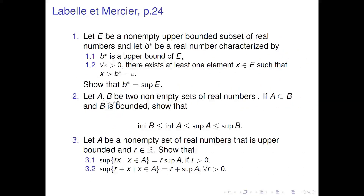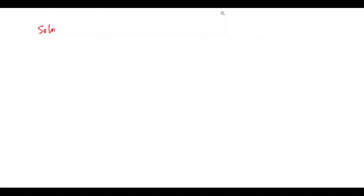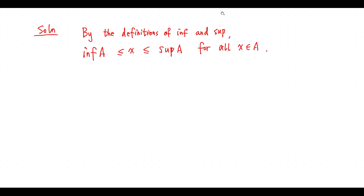Let A, B be two non-empty sets of real numbers. If A is contained in B and B is bounded, show the inequalities. By definition, infimum A is less than or equal to x and x is less than or equal to supremum A, for all x in A. This says infimum A is less than or equal to supremum A.